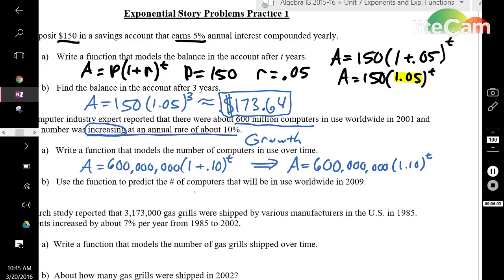Part b says use the function to predict the number of computers that will be in use worldwide in 2009. 2009 is your end date, 2001 was our beginning date, so 2009 minus 2001 is going to be 8 years, which is your t. If you plug in 8 for t, it will look like this: 600 million times 1.10 to the power of 8. When we calculate it, you get approximately 1,286,000,000 computers.